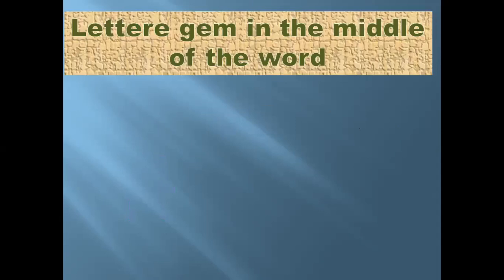The letter Jim in the middle of a word has two forms or two shapes. The first shape: make a line, then a curve, with one dot at the bottom. Example: Masjidun. And make an arm from the right. The second form: make a line, a curve, and one dot at the bottom. Example: Masjidun.